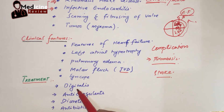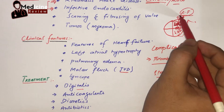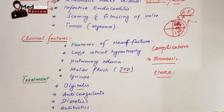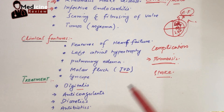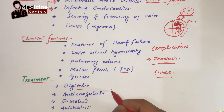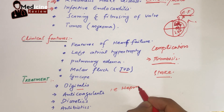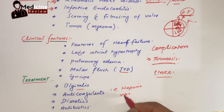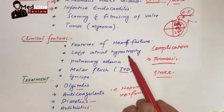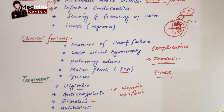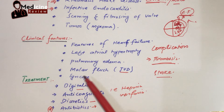For symptomatic treatment: digitalis is given because of the high risk of atrial fibrillation — it is an inotropic agent. Anticoagulants such as low molecular weight heparin and warfarin are given because of the risk of thrombosis. Diuretics are also given because of the features of heart failure, improving the patient's quality of life.